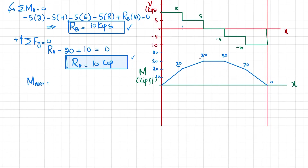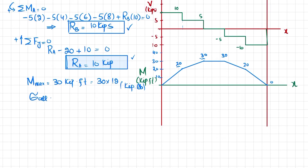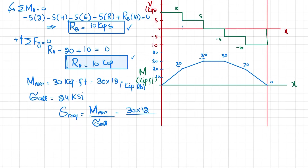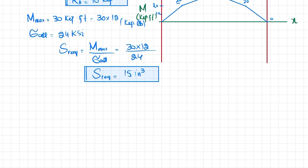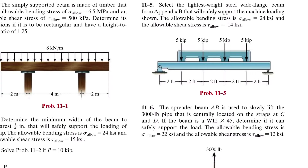From the bending moment diagram, the maximum bending moment is 30 kip-ft, which equals 30 × 12 = 360 kip-in. The allowable bending stress is 24 ksi, so the required section modulus is: S_required = M_max / σ_allow = 360 / 24 = 15 in³. Now we go to Appendix B of the book to select the lightest wide flange beam with a section modulus at least equal to 15 in³.